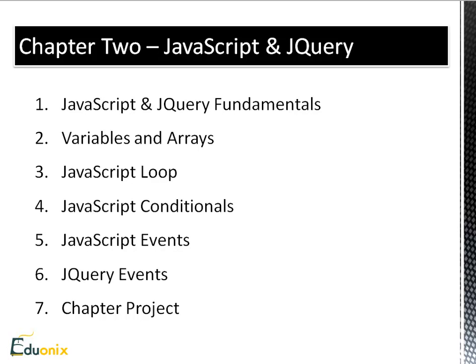Chapter 2 will be on JavaScript and the JavaScript library jQuery. We'll discuss the fundamentals — JavaScript variables and arrays, all the programming basics: loops, conditionals, if statements, switch. We'll also be looking at JavaScript and jQuery events — browser events that we can grab onto and make certain things happen when an event is launched, such as a click or a hover. And then we'll do a project involving JavaScript and jQuery.